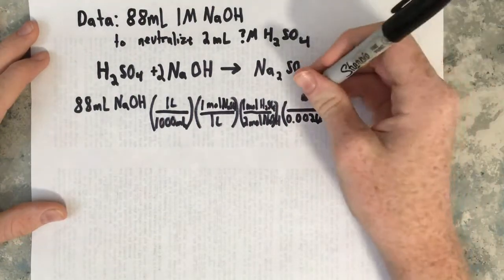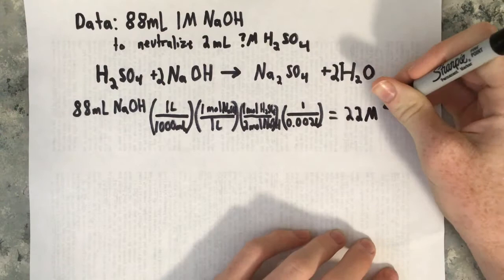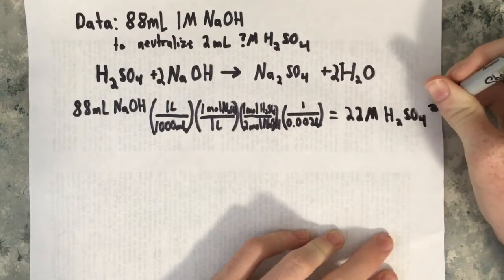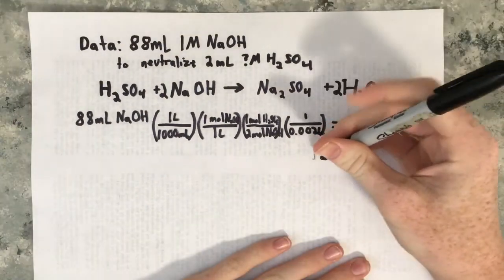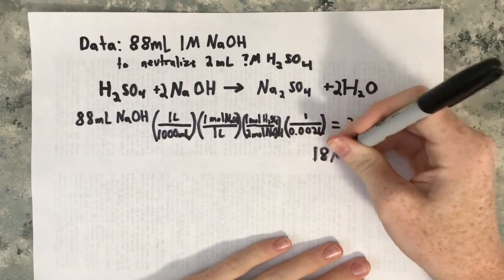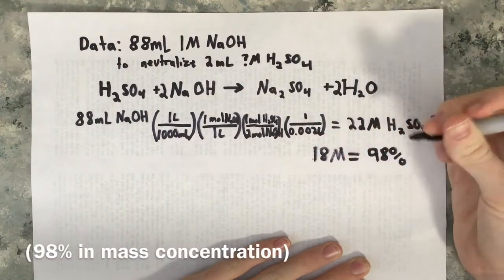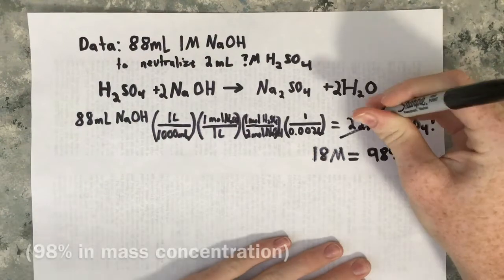But the problem is 22 molar sulfuric acid isn't really possible, because 18 molar sulfuric acid is 98 percent. So what I've learned is that I'm wrong. That was trial one, and I'm sorry I didn't get you a successful run, but that's just how science goes.